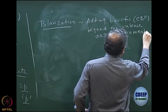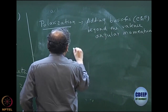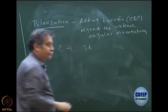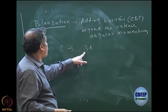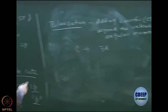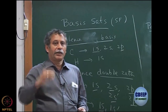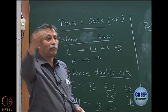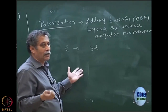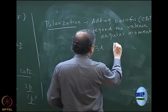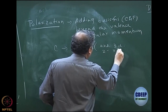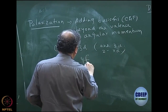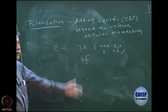For example, for carbon, that would mean adding D functions — 3D. The label 3D is not critical; D functions are what matter. Adding 3D functions is important for carbon because the valence angular momentum is P. It stops at P, so you have to add at least one more. You can even add two more. People typically use one 3D function, but you can use two, and people are also using F, 4F, and so on — many functions today.